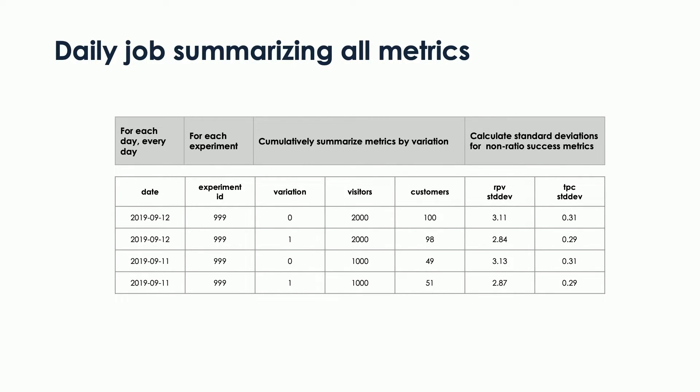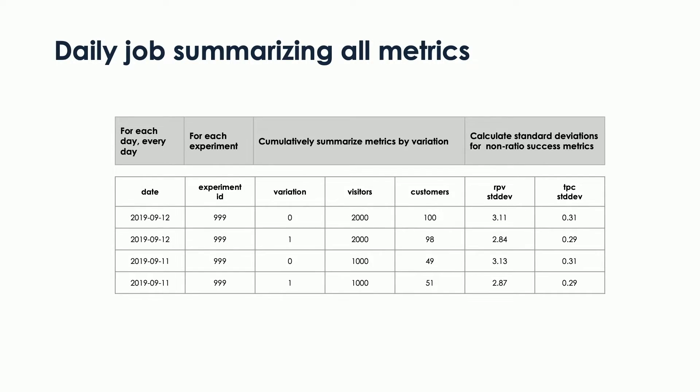That's why we introduced a mid-layer: an experiment summary table in between. It's basically a daily job that summarizes all basic metrics — for each experiment, for each day, for each variation, we calculate base metrics from the beginning of the experiment until the current date and append this as an extra row to the table. Importantly, we only store factual information and do not do any calculations in this table, because we want to keep our definitions light and flexible. The one exception is that we do store standard deviations for some metrics, because those calculations simply need to happen on raw data.